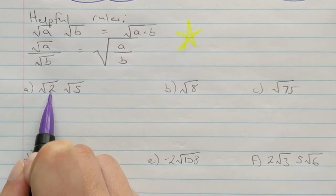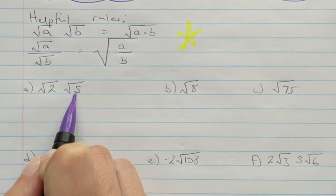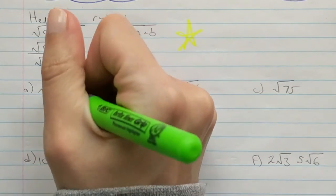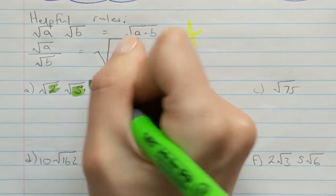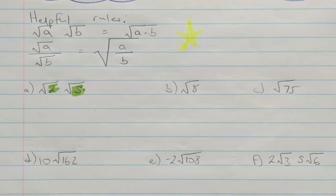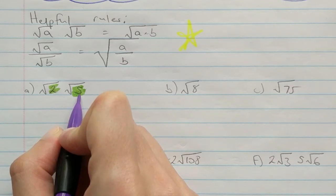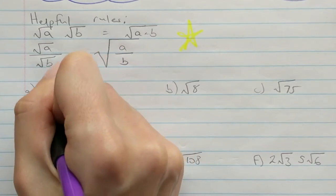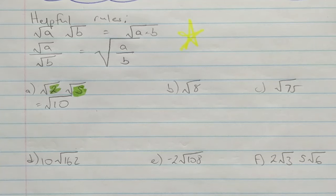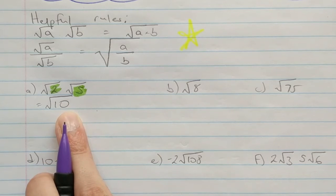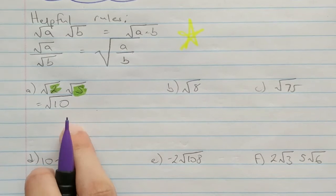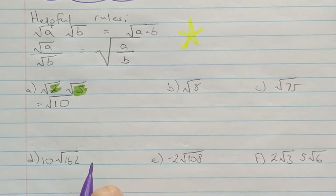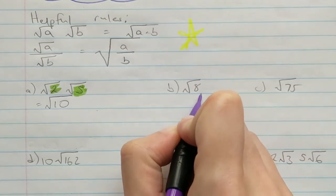Let's take a look at our first example: √2 × √5. We are going to multiply what is inside the brackets together because we want the fewest number of radical signs possible. So √2 × √5 = √10. We always need to be thinking: is there a perfect square hidden in here? There is not, so we leave it as √10.